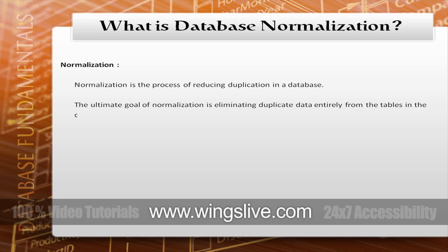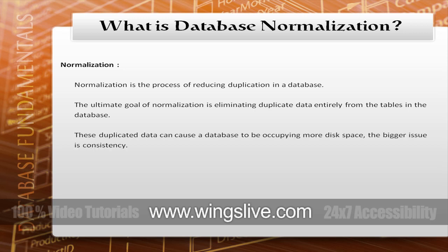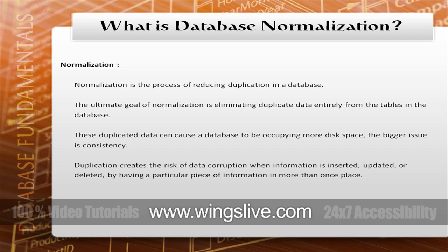The ultimate goal of normalization is eliminating duplicate data entirely from the tables in the database. This duplicated data can cause a database to occupy more disk space. The bigger issue is consistency. Duplication creates the risk of data corruption when information is inserted, updated, or deleted by having a particular piece of information in more than one place.